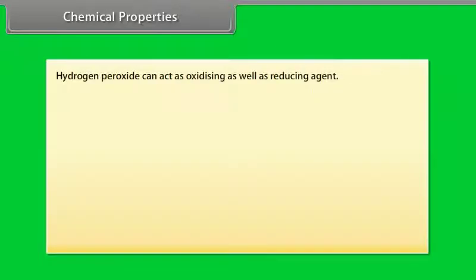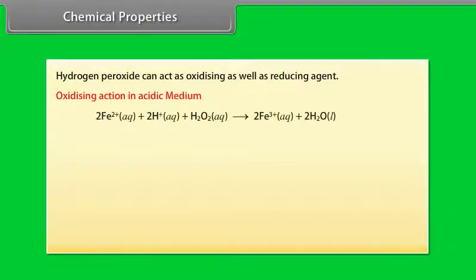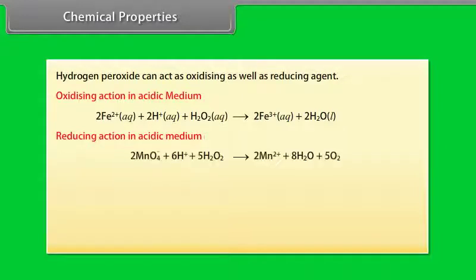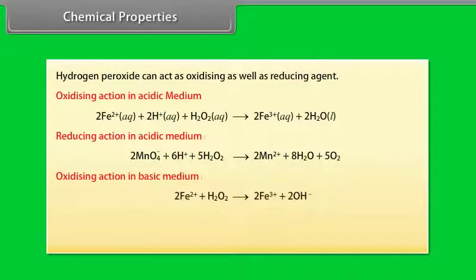Chemical properties: Hydrogen peroxide can act as an oxidizing as well as reducing agent. It has oxidizing action in acidic medium, reducing action in acidic medium, oxidizing action in basic medium, and reducing action in basic medium.